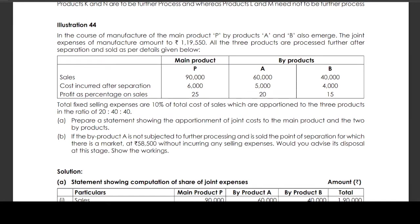Total fixed selling expenses are 10% of total cost of sales, which are apportioned to the three products in the ratio of 20:40:40. Prepare a statement showing the apportionment of joint cost to the main product and the two by-products.